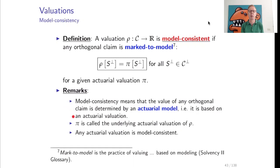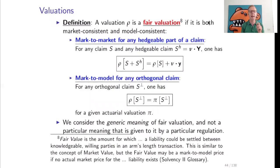Model consistency means the value of any orthogonal claim is determined by an actuarial model. If we have an orthogonal claim, we take a best estimate and a risk margin. These cannot be directly observed — you must set up a model, choose a probability measure, and choose a risk margin. Different actuaries can therefore find different prices.